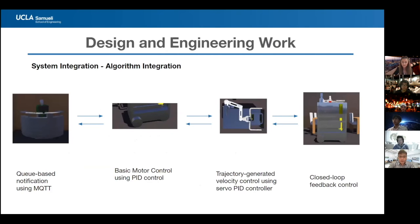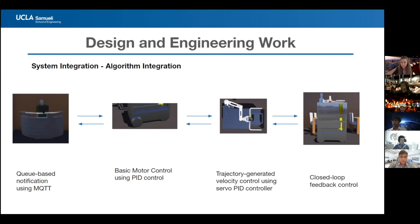The system uses simple wireless transmission, possibly MQTT, to send commands to the base — the brains of operation. The base drives the robot to the table, signals arrival, and initiates tray pickup using quintic polynomial trajectory code with a PID-controlled servo motor. After tray storage, the storage compartment uses closed-loop feedback control. Future iterations plan to make the system completely autonomous.